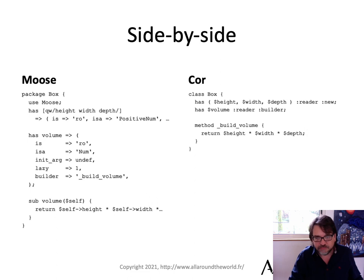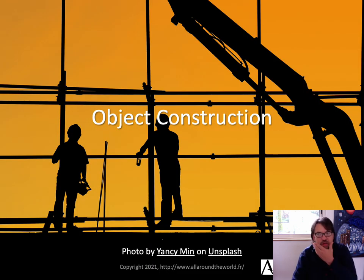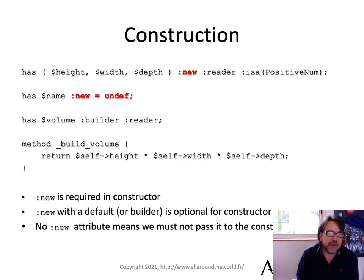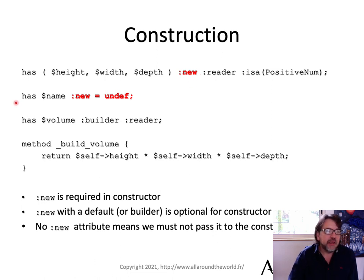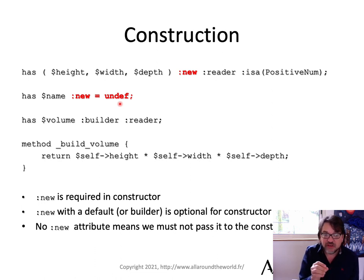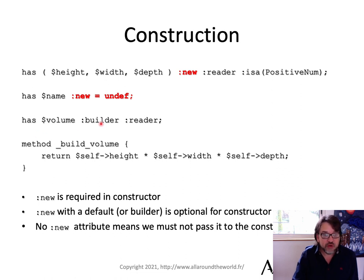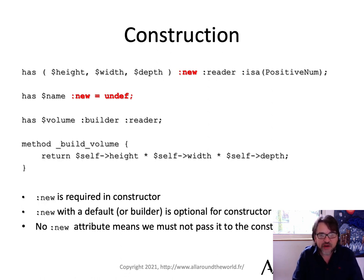Let's talk about object construction. Here we have height, width, and depth — because we have 'new', they are required in the constructor. Here we have name with 'new' but also a default value, which means it is optional to the constructor. And here we have no 'new' attribute, so you cannot pass that in the constructor at all. That's a simple understanding of slots in object creation — very simple, very easy.